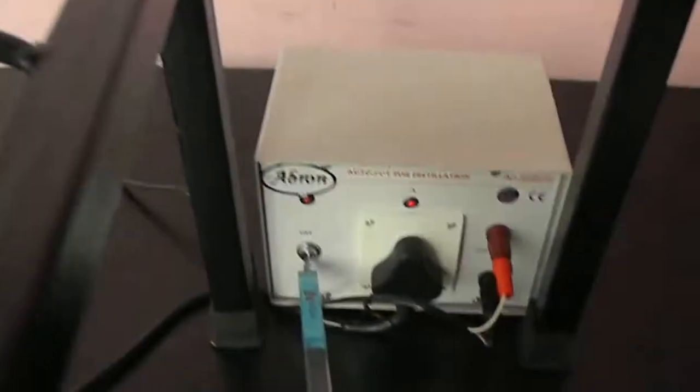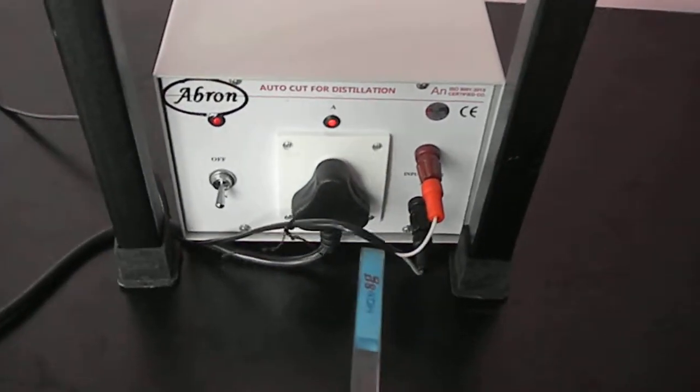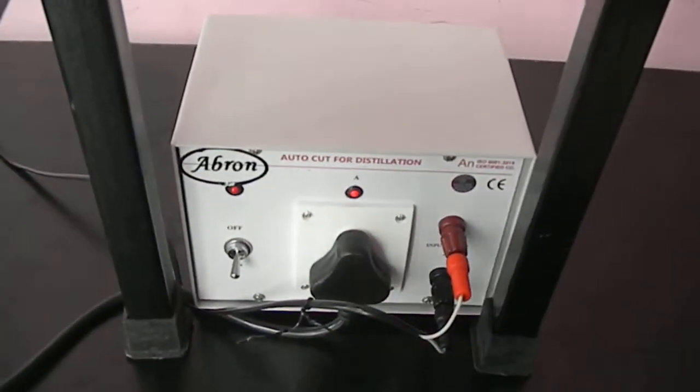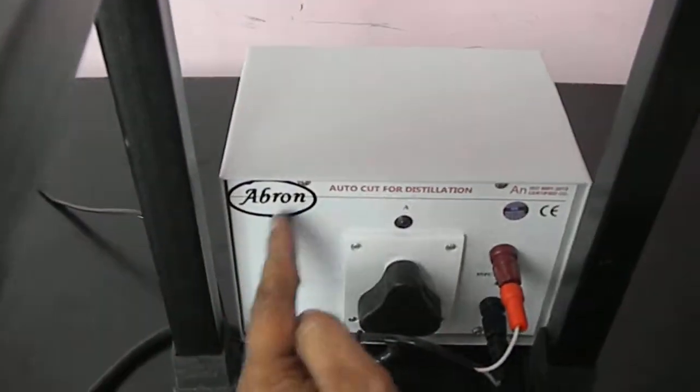The auto cut-off has one switch which is an on-off switch for this heater. This probe goes in and automatically this indicator will activate. Now if you switch it off, this completely switches off.